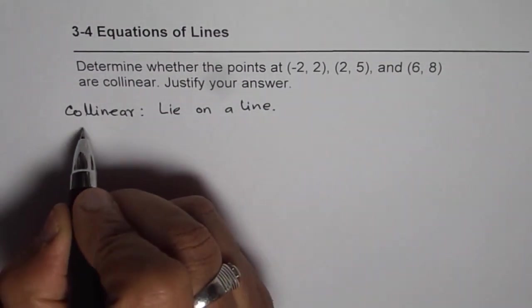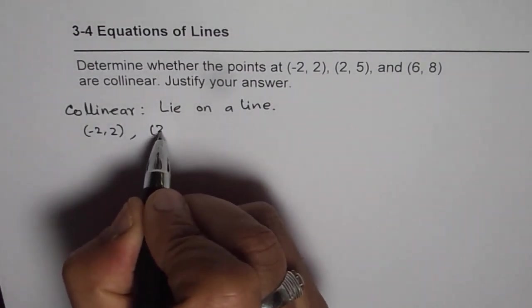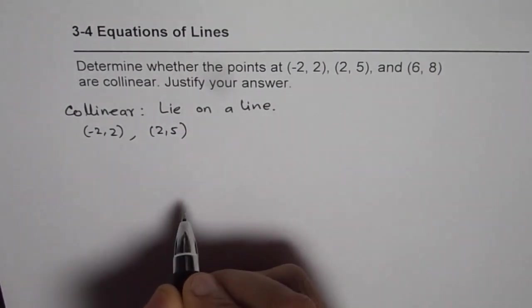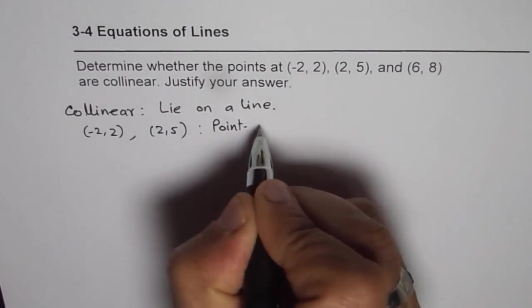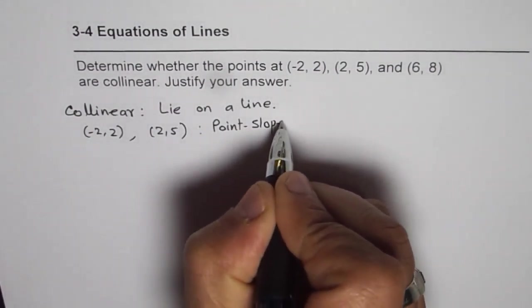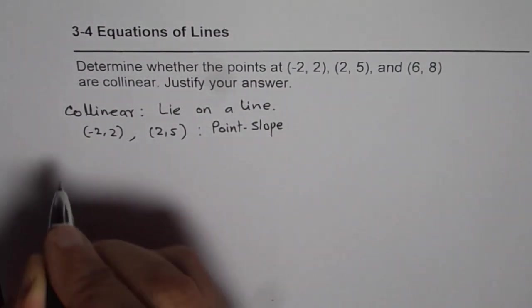So let us use two points which are (-2, 2) and (2, 5) and find the equation of the line, and we will use point-slope form of the equation.